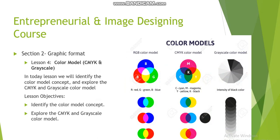In our fourth lesson we'll talk about another two color models: CMYK, which stands for cyan, magenta, yellow, and black — the combination of colors will come from these four colors — and grayscale, which depends on increasing or decreasing the amount of white and black inside the image. We'll identify the color model concept and explore both CMYK and grayscale.